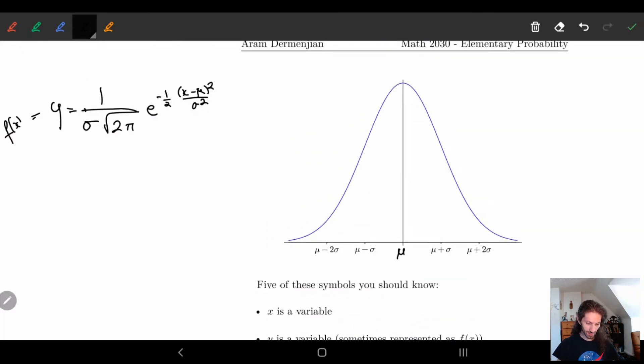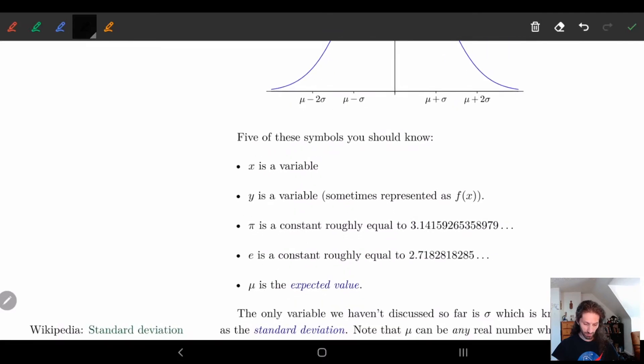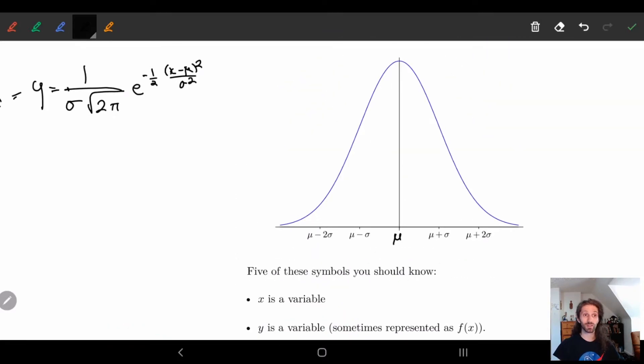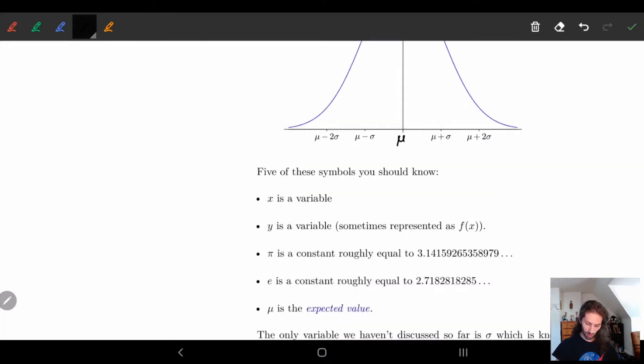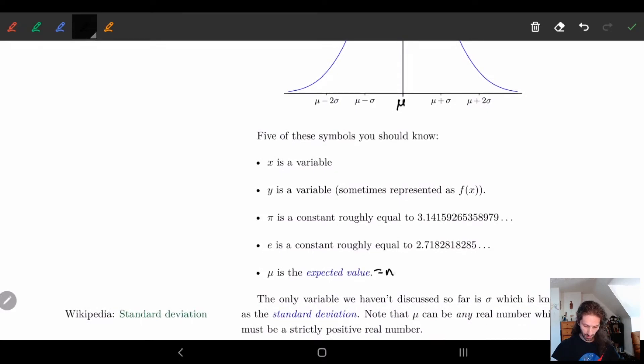And the only thing that we're missing is mu. So we know mu, that's our expected value. So mu, if you recall, this is normally just equal to np for the binomial distribution.